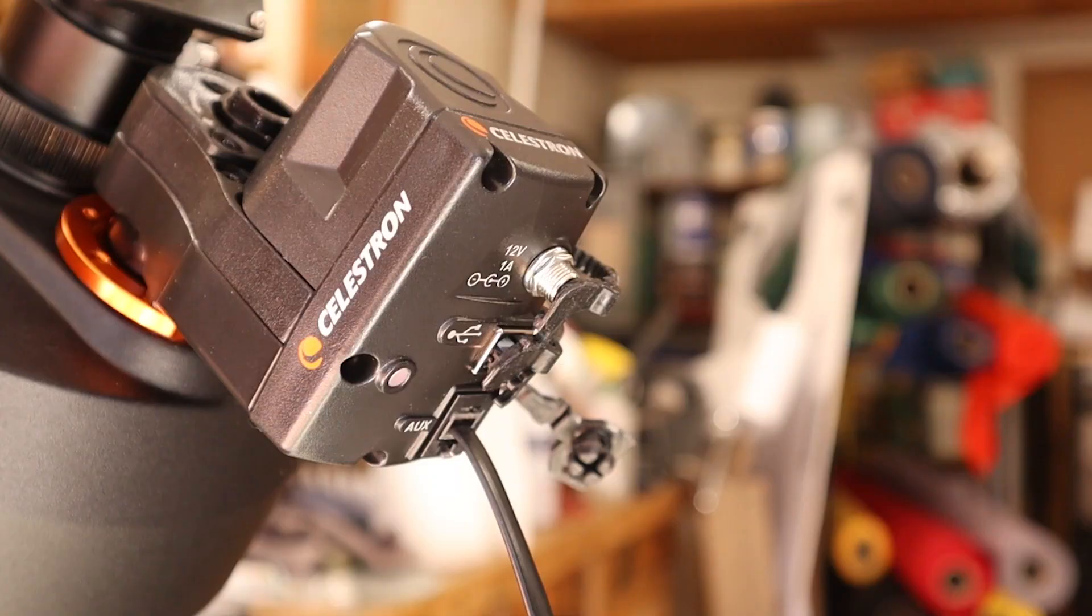You can calibrate and control the focus motor through the handheld control on the telescope. You can also control this focus motor through the free software that Celestron has available. And control turns out to be very important with this because it can focus fast or very, very slow, which we want most of the time.